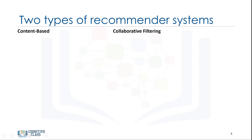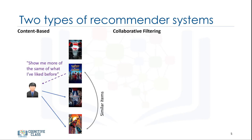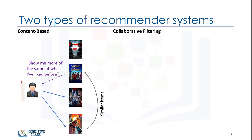There are generally two main types of recommendation systems: content-based and collaborative filtering. The main difference between each can be summed up by the type of statement that a consumer might make. The main paradigm of a content-based recommendation system is driven by the statement: show me more of the same of what I've liked before. Content-based systems try to figure out what a user's favorite aspects of an item are and then make recommendations on items that share those aspects.